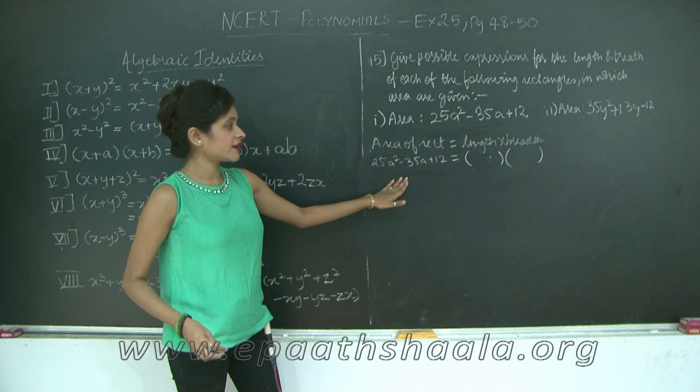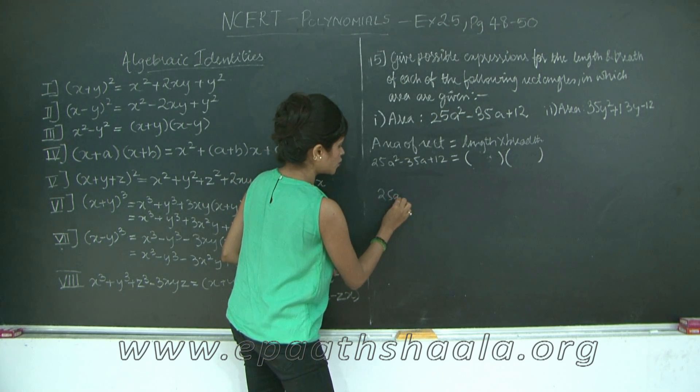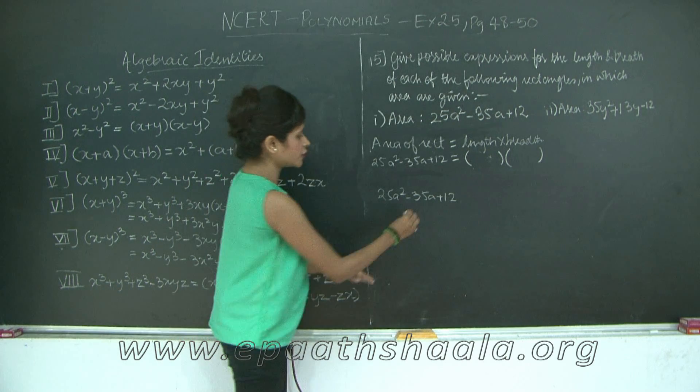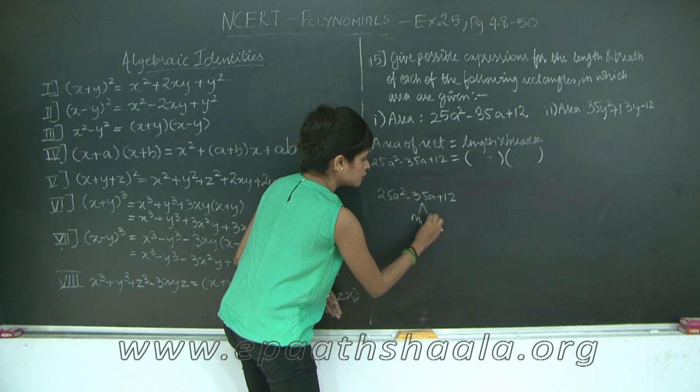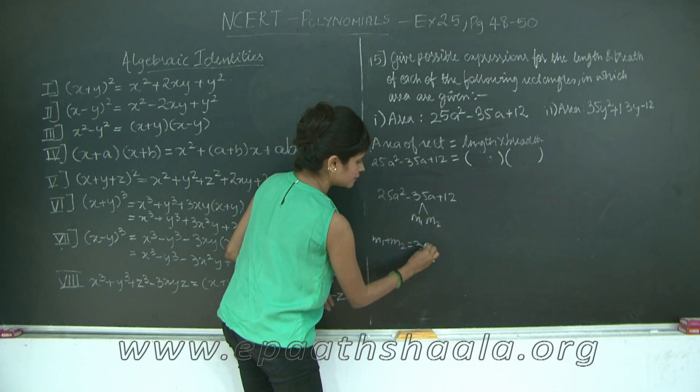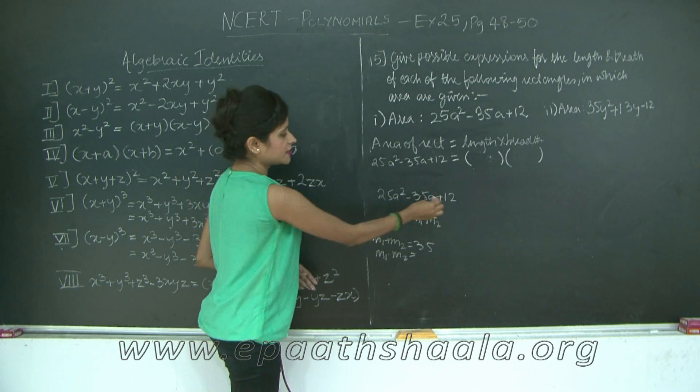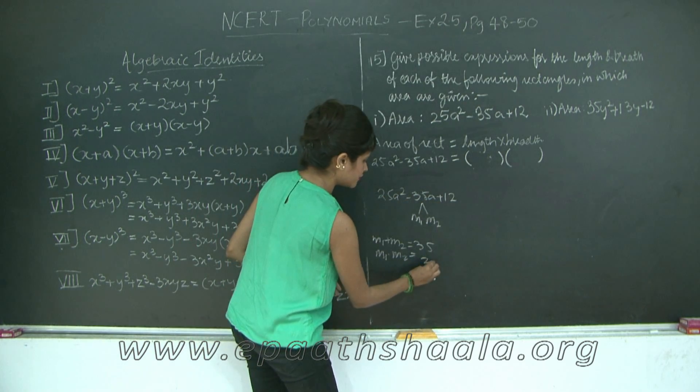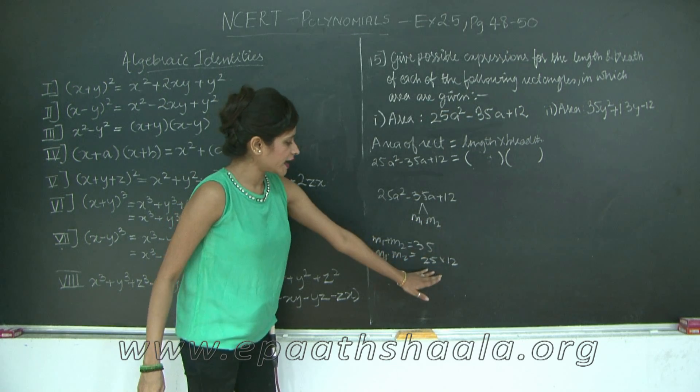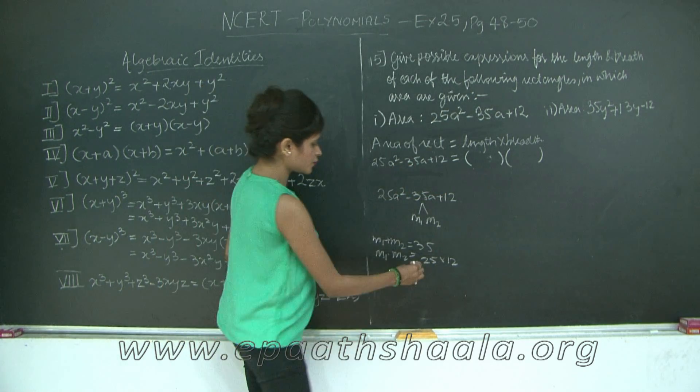25a² minus 35a plus 12, because factorizing is nothing but finding the products and putting them together for my expression. So how am I going to factorize this? By splitting the middle term. Revising, I have 25a² minus 35a plus 12. Now I need to split my 35 into two terms M1 and M2 such that